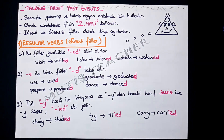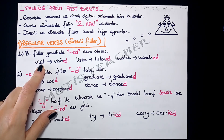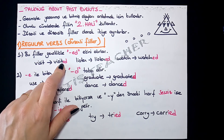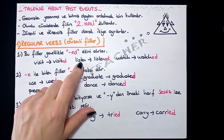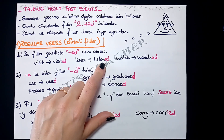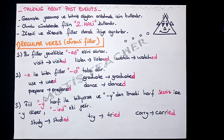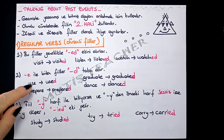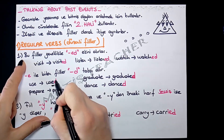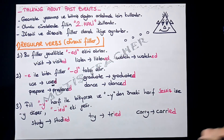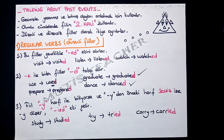Regular verbs — düzenli fiiller. Bu fiiller genellikle -ed ekini alırlar. Mesela: visit → visited (ziyaret etti), listen → listened (dinledi), watch → watched (izledi). Eğer fiil e ile bitiyorsa sadece -d takısını alır: use → used, prepare → prepared (hazırladı), graduate → graduated (mezun oldu), dance → danced (dans etti).